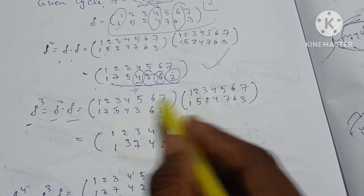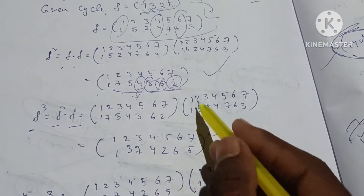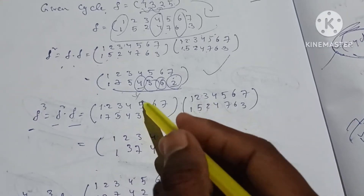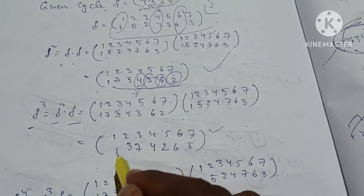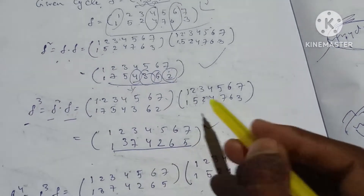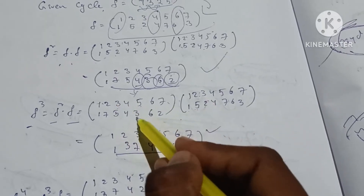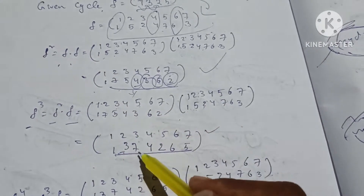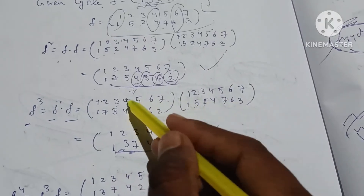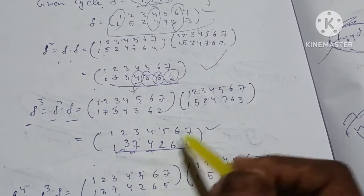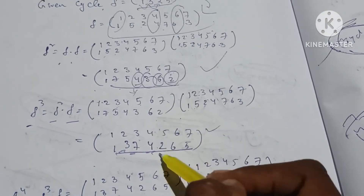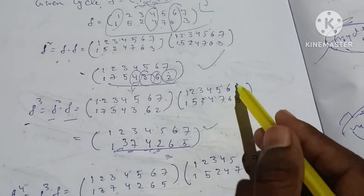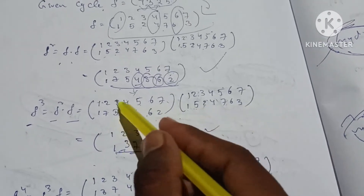Pi value: 1×1, 1×1. Next: 2×5, 5×3. 3×2, 2×7 — so 7→4. Next: 4×4, 4×4. 5×7, 7×2. 6×6. Next: 7×3, 3×5. F³ is computed. Next F⁴ = F³ into F.